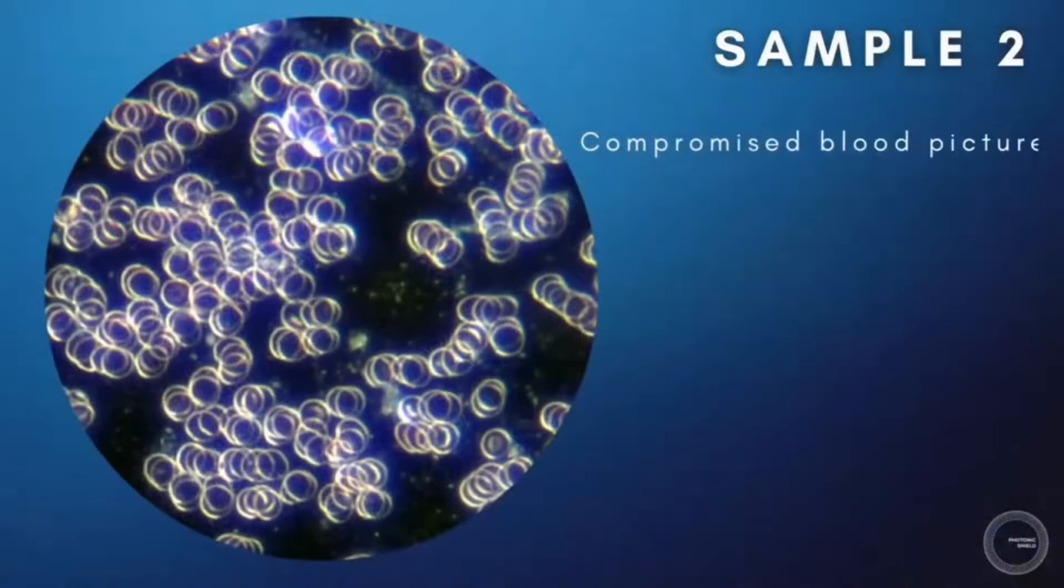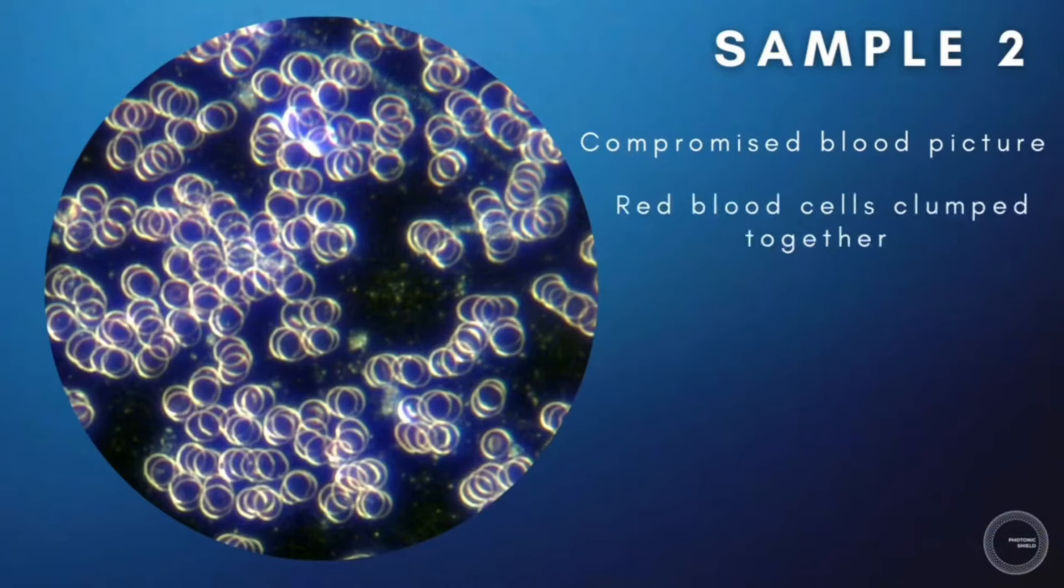The second sample showed a compromised blood picture with red blood cells clumping together, cell membranes puckering and blood flow inhibited.